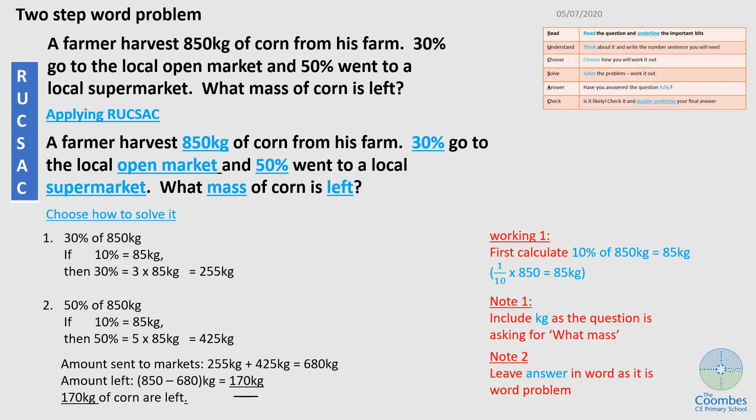But the question is, what mass is left? Now, the starting amount was 850 kg. So I have to take away the amounts that were sent. Then I will leave how much is left. So 850 minus 680 kg will give me 170 kg left. So have I answered the question fully? Yes. I can actually write this in a number sentence because it's a word problem.